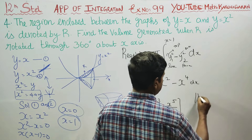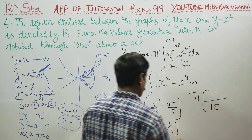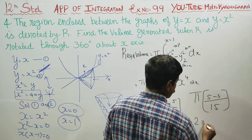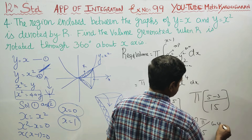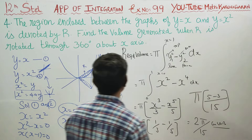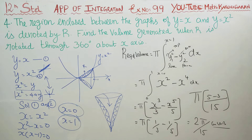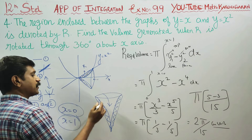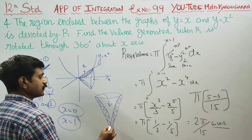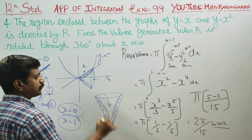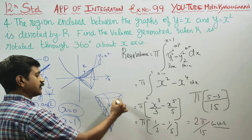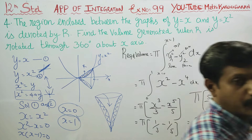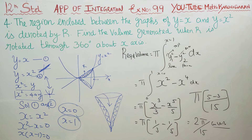Taking the LCM, with denominator 15, we get 5 − 3 = 2. The answer is 2π/15 cubic units. This is the required volume of the shaded rotated portion of the diagram. So 2π/15 is the final answer. Thank you.